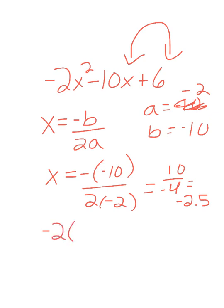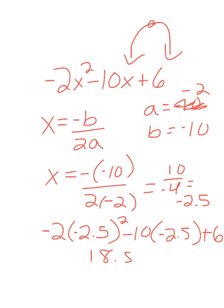Then I'm going to take that and substitute it in. When I substitute, I need to use parentheses. I'm replacing all of my X's with negative 2 and a half. I'm going to type negative 2, parentheses, negative 2.5 squared, minus 10, parentheses, negative 2.5 plus 6. I end up with 18.5. So the coordinates of this peak up here are negative 2 and a half, 18 and a half.